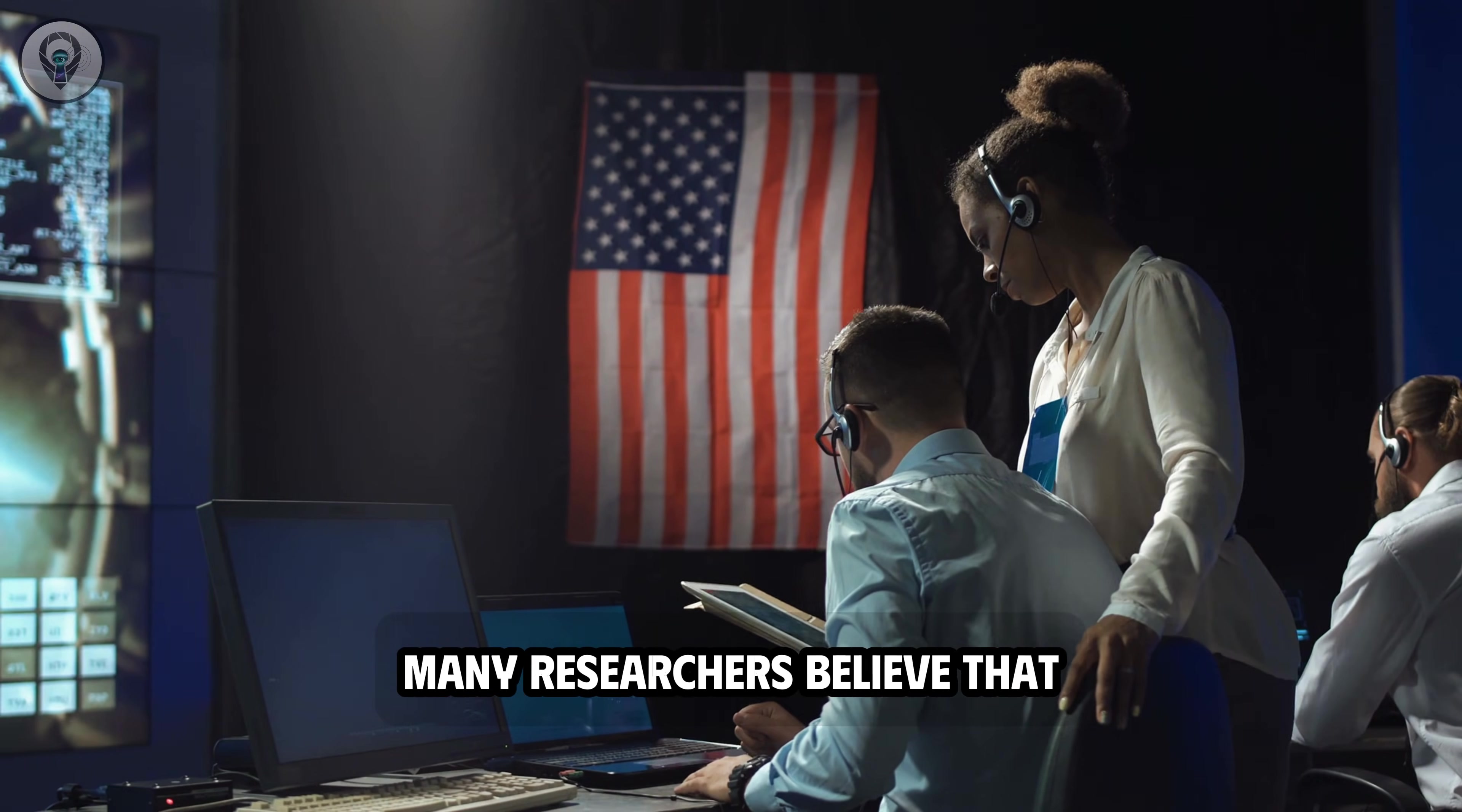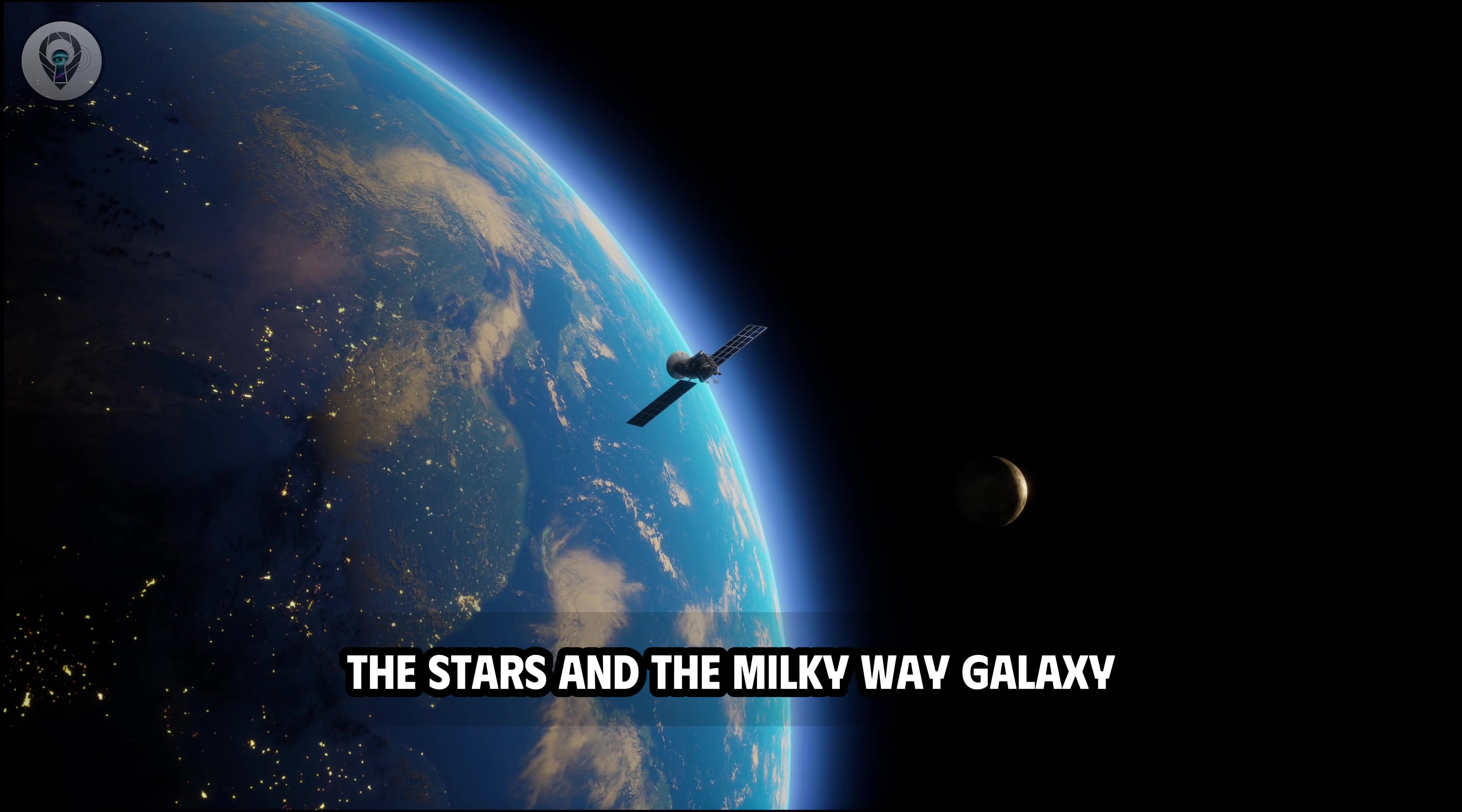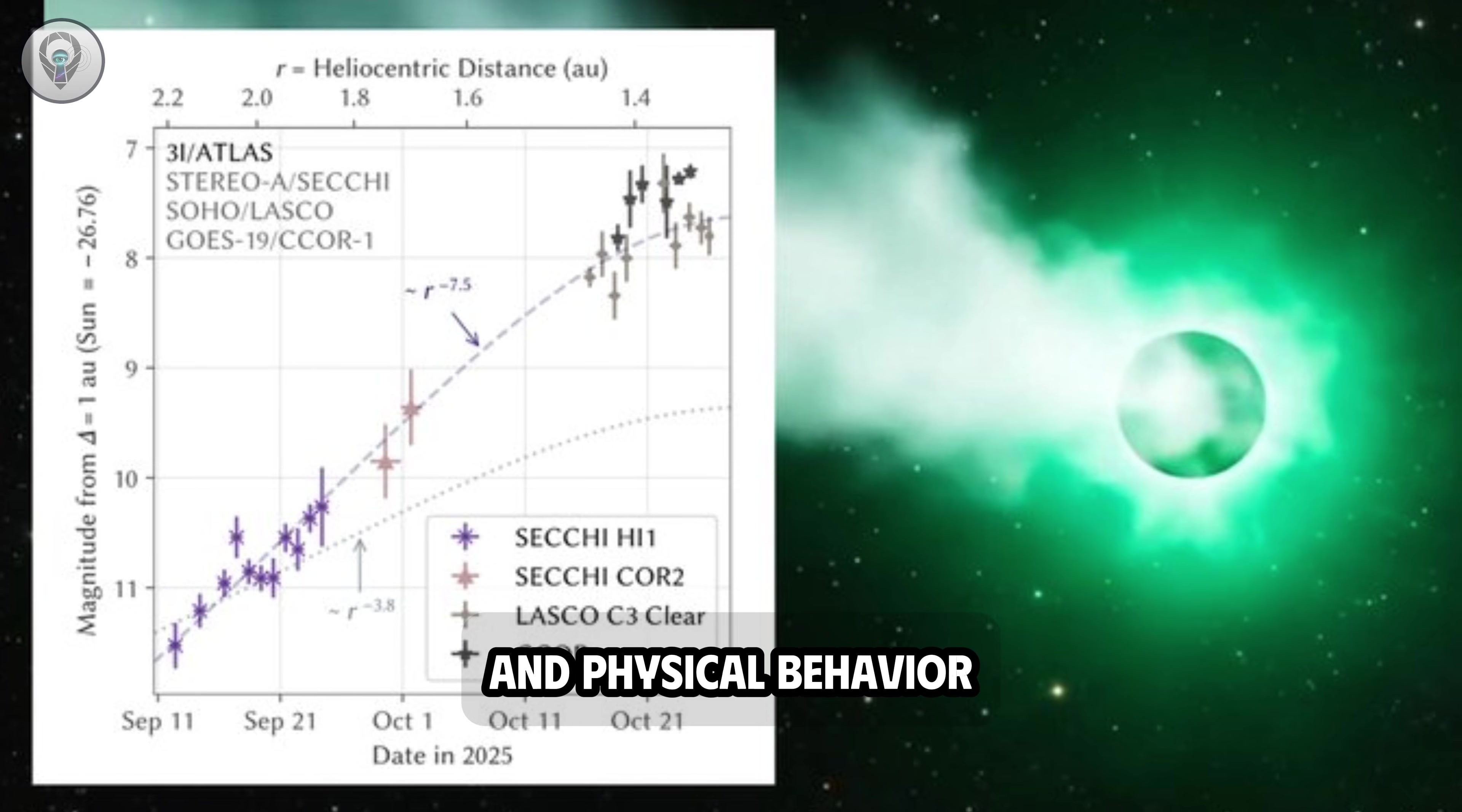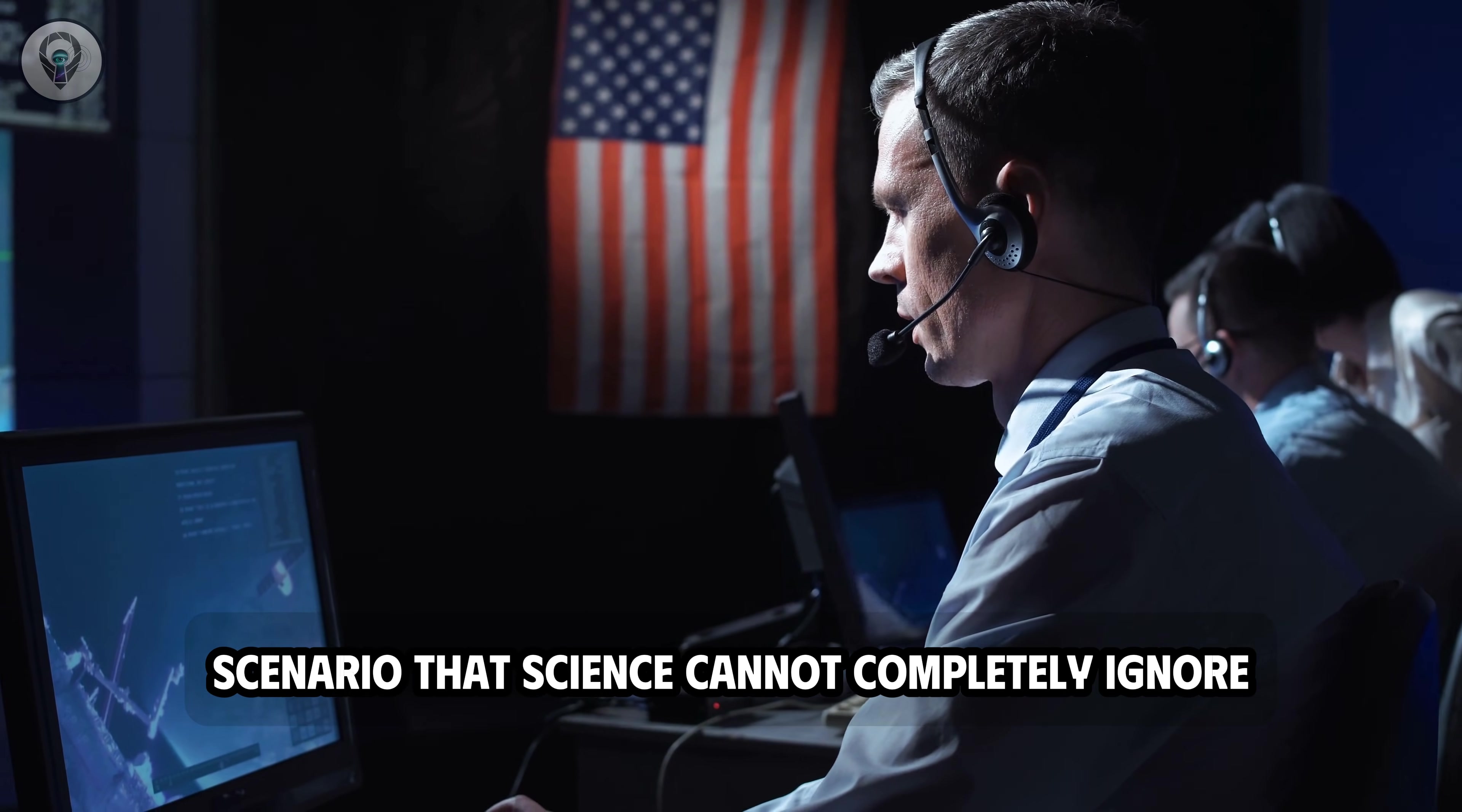Furthermore, many researchers believe that even in a scenario where visitors from outside the solar system exist, it is highly unlikely they would intentionally target Earth, given that human existence spans a very short period compared to the age of Earth, the stars, and the Milky Way galaxy. In this context, the emphasized approach is careful observation and maximum data collection rather than rushing to conclusions. Only based on measurable information about the object's orbit, composition, and physical behavior can scientists gradually determine its true nature. This is particularly important because although the probability is very small, the possibility that 3i Atlas is not a natural object is still considered a black swan scenario that science cannot completely ignore.